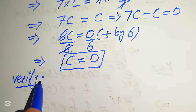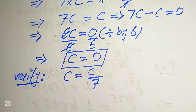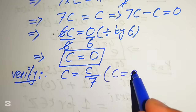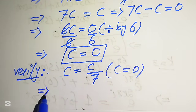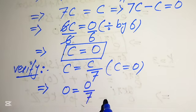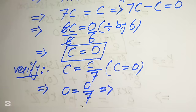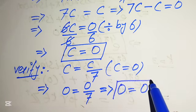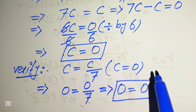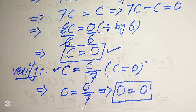Finally, we verify the answer. Substituting c equals zero into the original equation c equals c over seven gives zero equals zero over seven. Since zero divided by any number is always zero, the right hand side equals zero, so we get zero equals zero. This confirms that c equals zero satisfies the given equation, and that is our final answer. Thank you for watching — please subscribe to my channel for more videos.